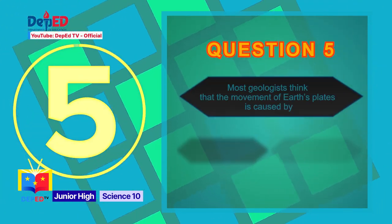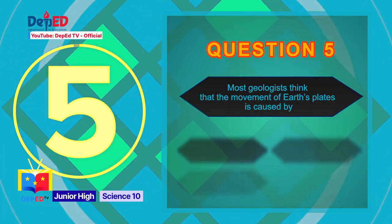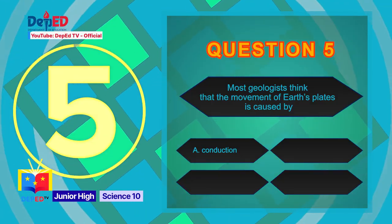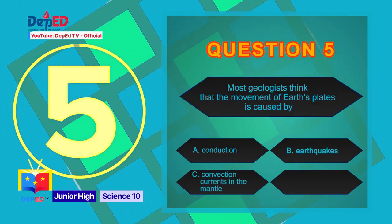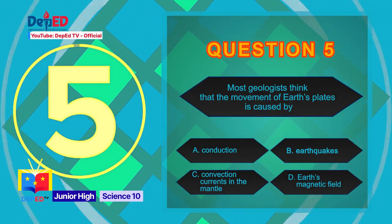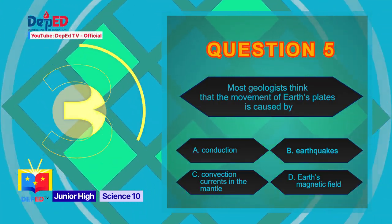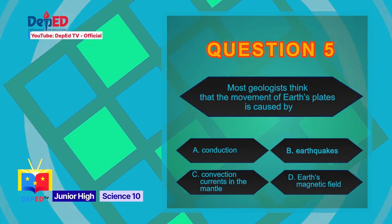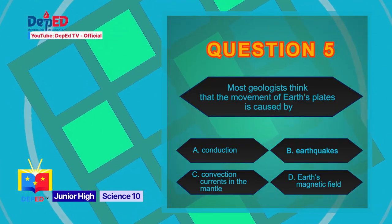Question number 5: Most geologists think that the movement of Earth's plates is caused by — A) Earth's rotation, B) gravitational pull of the moon, C) convection currents in the mantle, or D) Earth's magnetic field. The correct answer is letter C: convection currents in the mantle.